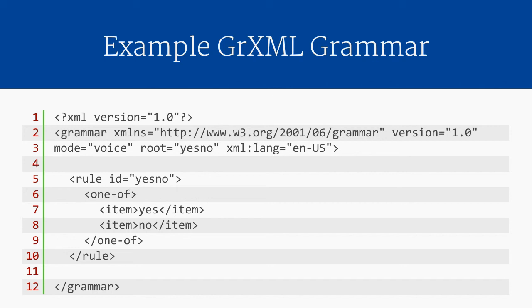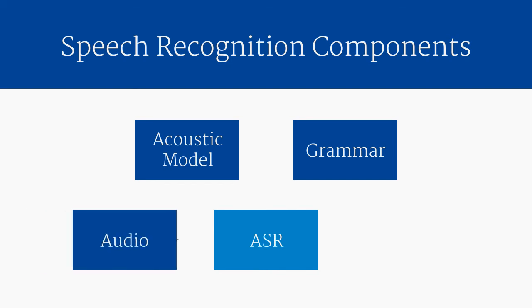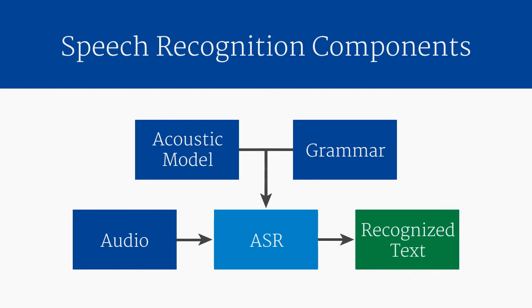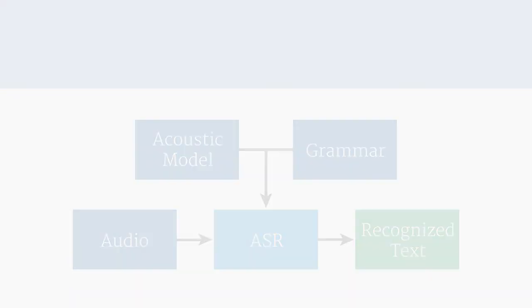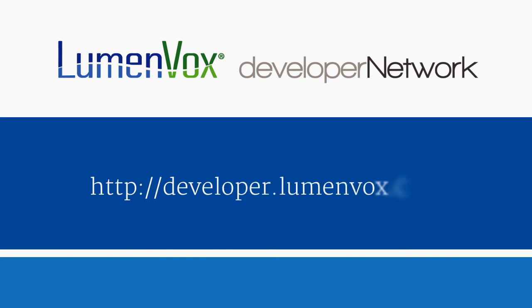Now that you have an idea of what a language model and grammar are, you have an understanding of all the components necessary for basic speech recognition. The Lumenvox Automatic Speech Recognizer takes spoken audio from a user and compares that audio to its internal acoustic model, using a grammar supplied by an application developer to help guide that search. The ASR then returns text representing what the user said. Because grammars constrain the possible results from the ASR, building good grammars is a vital part of building successful speech applications. For more detailed information on how to write, troubleshoot, and tune grammars, visit us online at developer.lumenvox.com, where you can engage directly with other speech developers, view more videos, and learn from the many white papers, articles, and other resources.